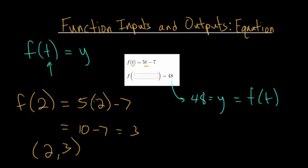This is the usual way to deal with functions, but this problem is actually the reverse. Now we're given the output value and we have to figure out what value you originally have to input to get that output. In other words, we're missing the t value and we're given the y value.